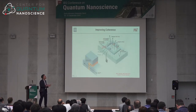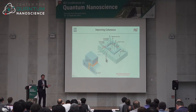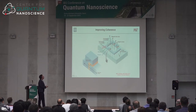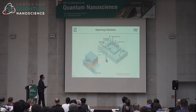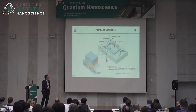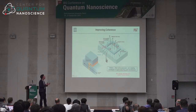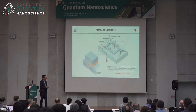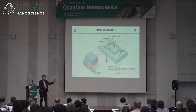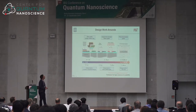To improve coherence, we have to fight a number of different noise sources: charge fluctuations in the substrate, magnetic field noise threading the flux loop, trapped vortices, phonons, photons, quasi-particle tunneling, and defects in or near the junction. Many of these are at the nanoscale. Critically, we've essentially exhausted the gains available from design improvements alone, and must now focus on material science and fabrication engineering.